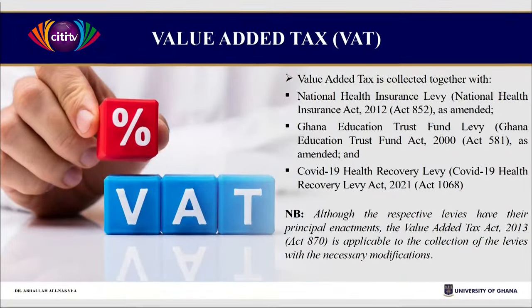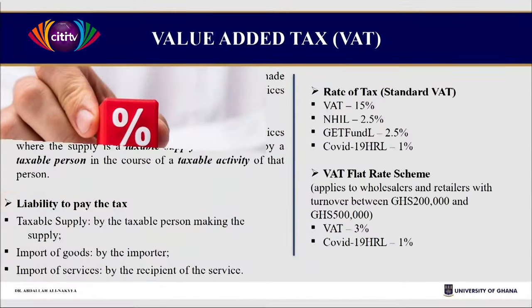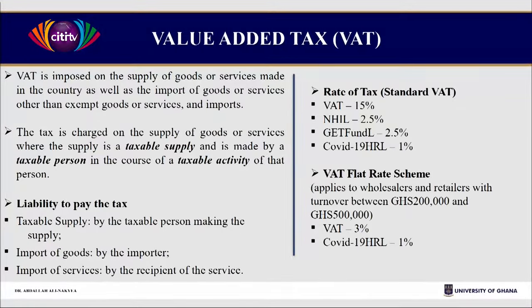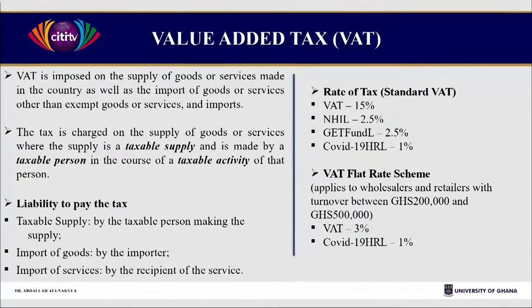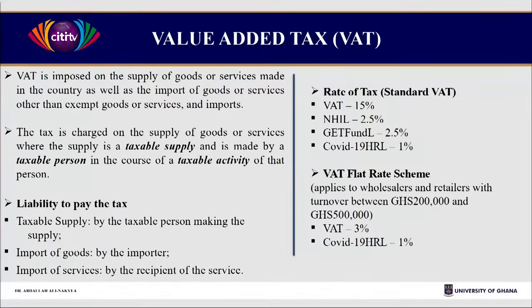Lastly we look at the VAT — the almighty VAT. It is collected along with the GET Fund, the National Health Insurance Levy, and the COVID-19 Health Recovery Levy. The rate is 15% for VAT, 2.5% for National Health Insurance and GET Fund, and 1% for the COVID-19 Health Recovery Levy. But for SMEs, a lot may find themselves on the standard rate. Those who are not on the standard rate may be on the VAT flat rate scheme, and your rate is 3%. Then you add the 1% COVID-19 Health Recovery, so you get 4%.